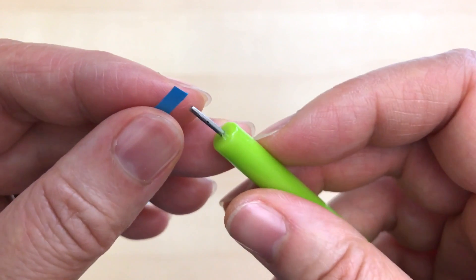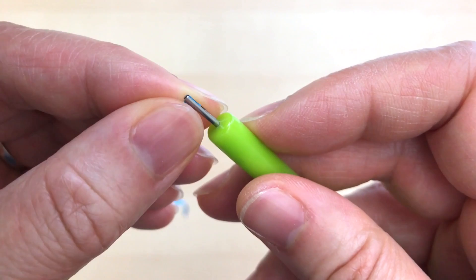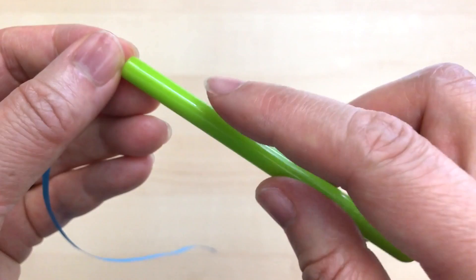To use a slotted quilling tool, we simply slide the paper into the slot. I tend not to like that tail hanging over the edge of my tool, so I'll bring that right to the edge and then start to turn my tool.